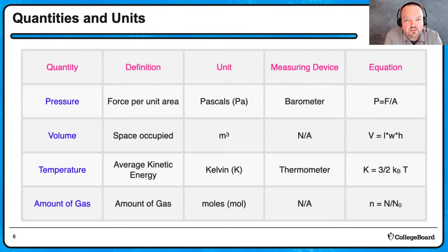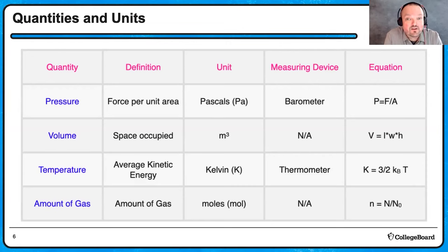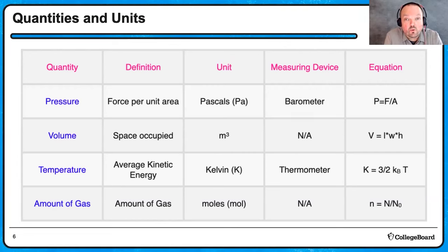I want to focus on the last two equations especially. Volume, depending on the shape, is length times width times height for a rectangular solid, or for a cylinder — which is more common — it's the cross-sectional area pi r squared times the height H. Temperature relates to kinetic energy: the equation three-halves k_B T gives the average kinetic energy of a single gas particle. That k_B is Boltzmann's constant — a very, very small number. Multiply by the temperature and by three-halves.